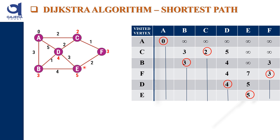This is how we find the shortest path using Dijkstra's algorithm. For example, the shortest distance from A to F is 3, as shown in the table. Similarly, the shortest distance from A to E is 5.